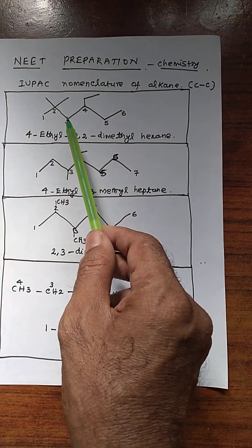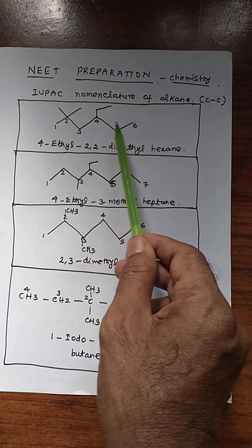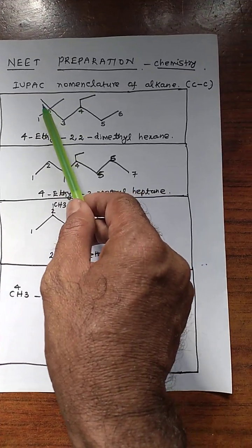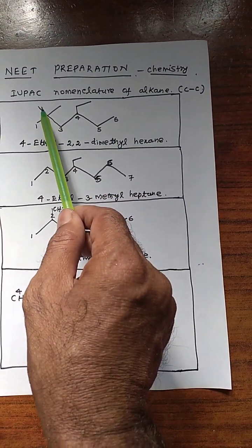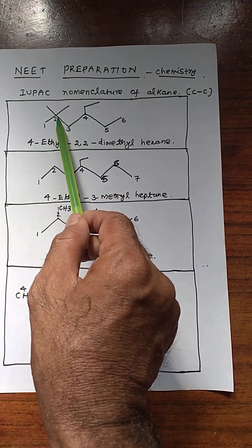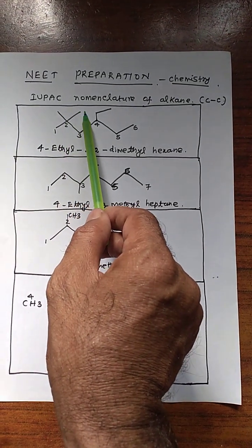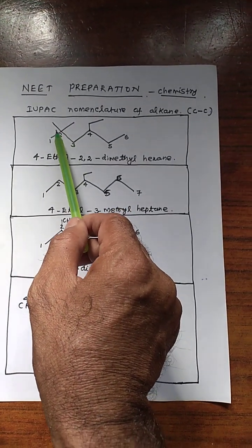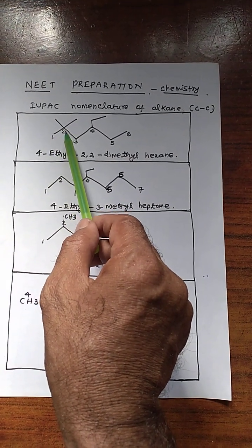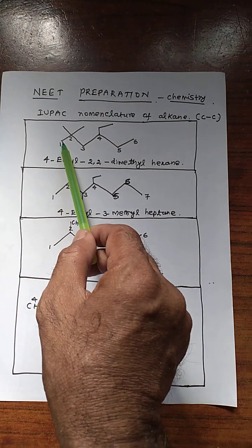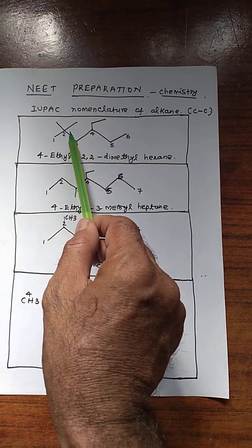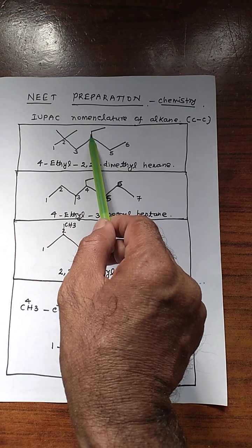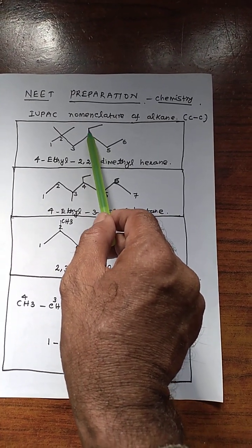Numbering is based on the substituent, that is the functional group. Substituent means this one and this one — CH3, that is methyl group. So numbering starts nearby the carbon. The positions are 1, 2, 3, 4. This symbol is the ethyl group.